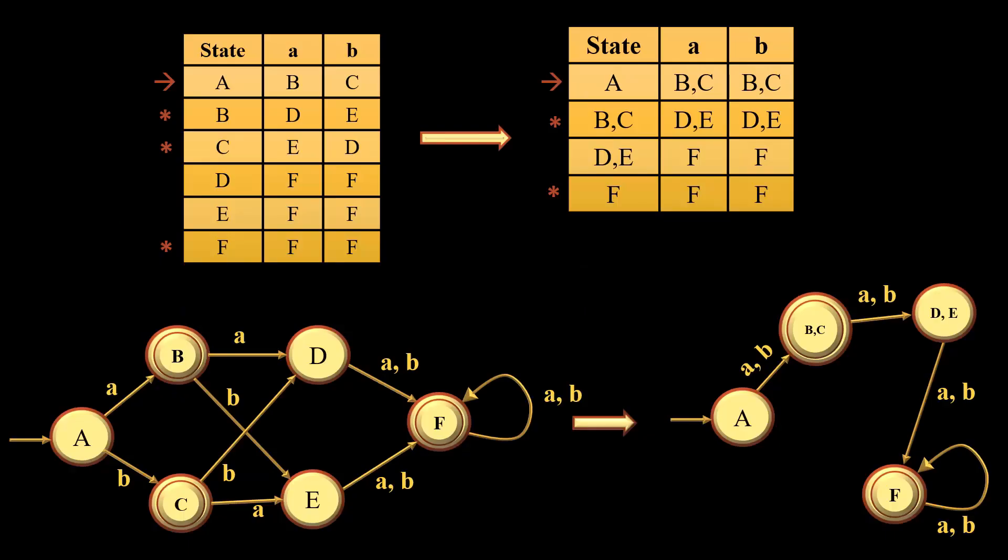Initially we had three final states B, C, and F. Since B and C have been clubbed together, we have merged two final states together, and two non-final states D and E have also been merged. So our six-state DFA has been reduced to a four-state DFA with A as the start state. This is the final output.